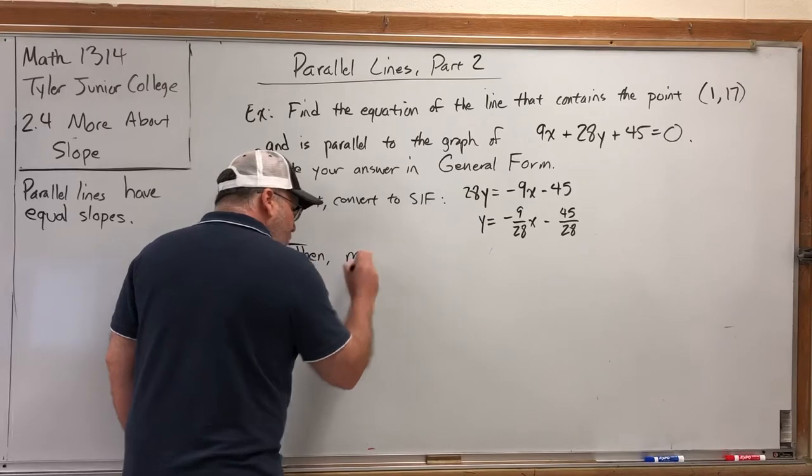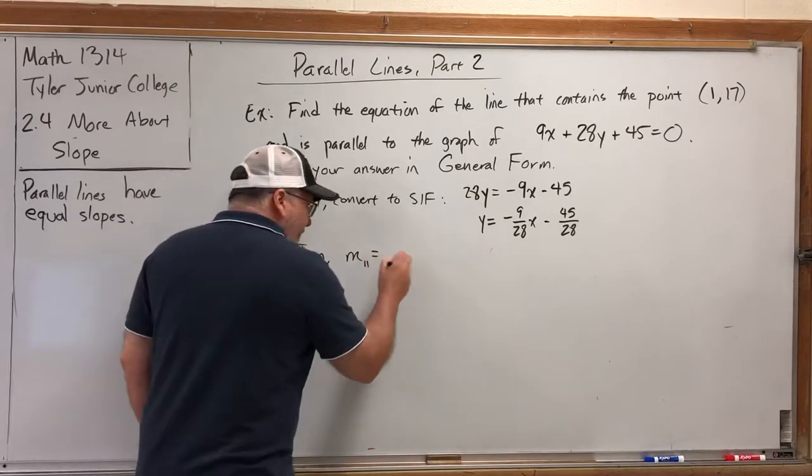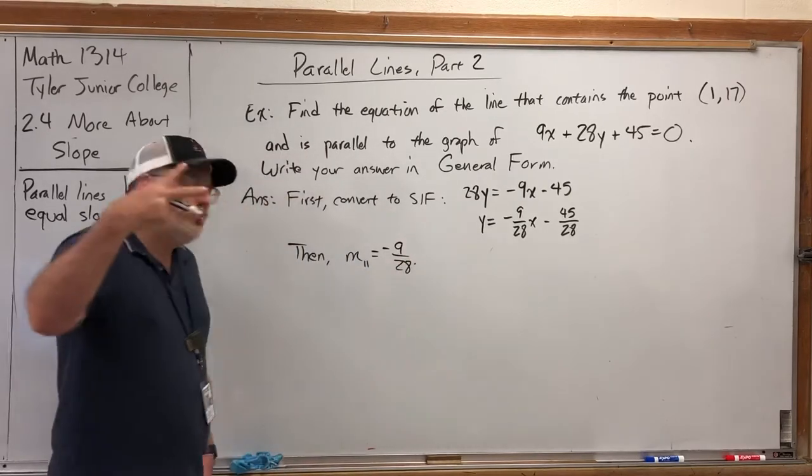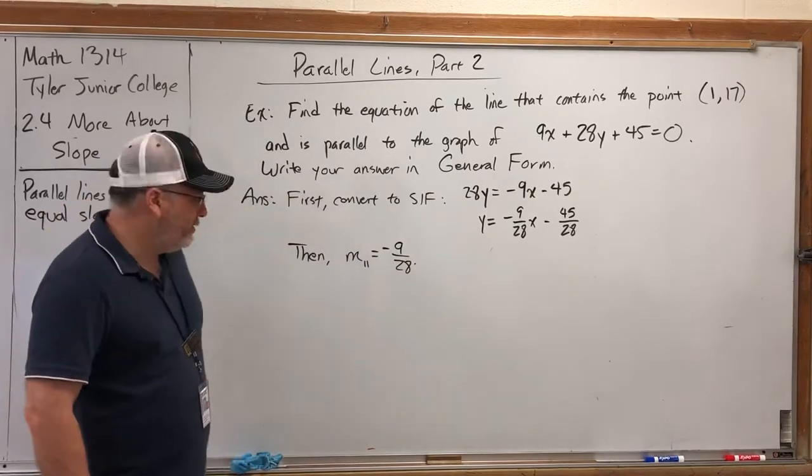So now that we know the slope-intercept form, we can say that the parallel slope, m subscript of the parallel line, is the same as the slope of that line, which is negative 9/28.